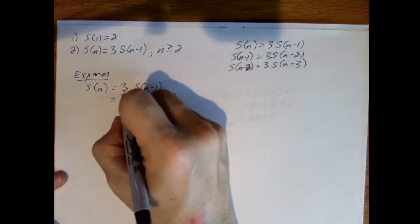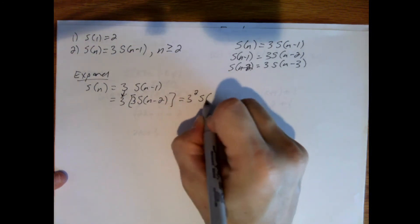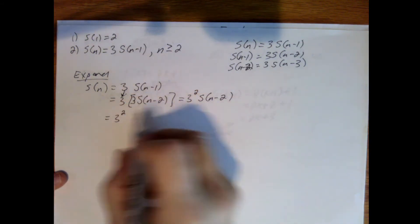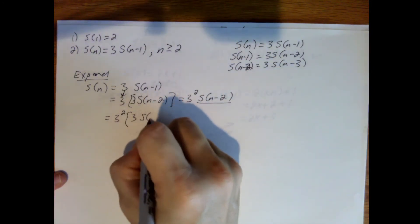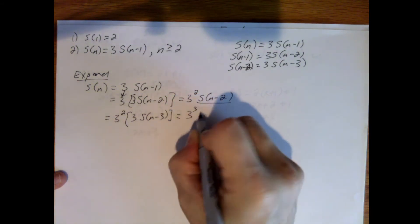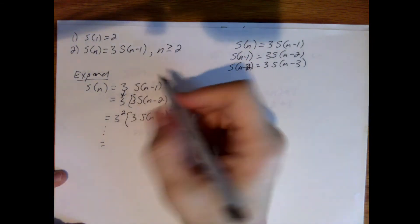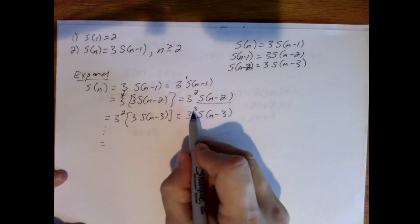So this is the original 3 from our definition, and replacing s of n minus 1 by 3 times s of n minus 2 gives 3 squared times s of n minus 2. I could say 9, but that makes it harder to find the pattern, so I write 3 squared. Expanding again: 3 squared times 3 times s of n minus 3 equals 3 cubed times s of n minus 3. There's a 1 and a 1, a 2 and a 2, a 3 and a 3.